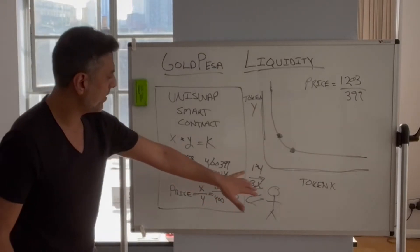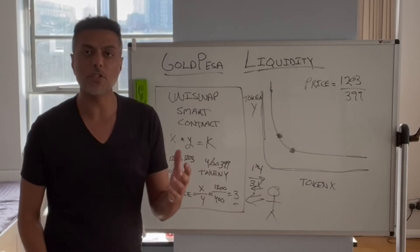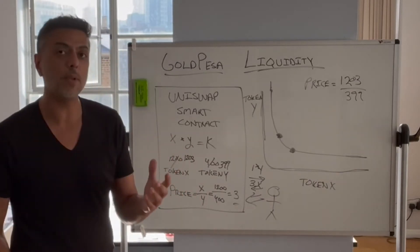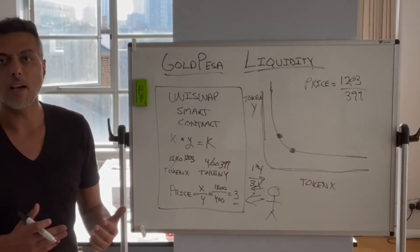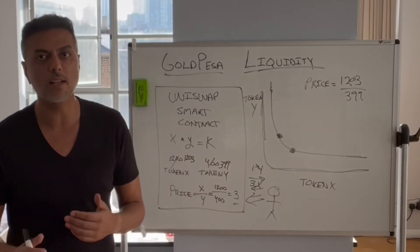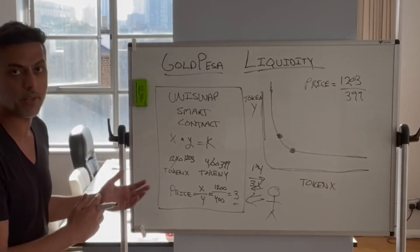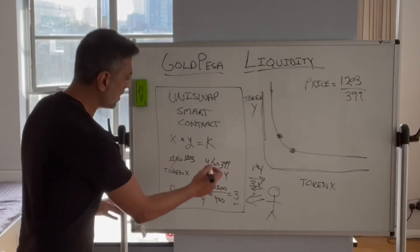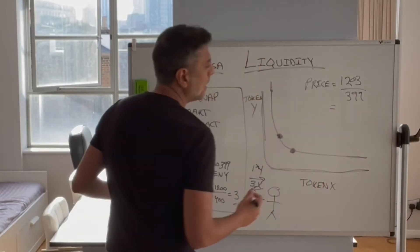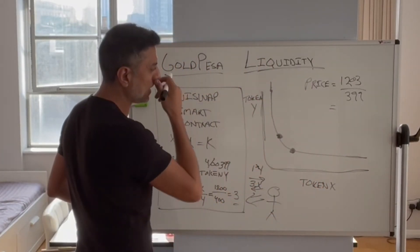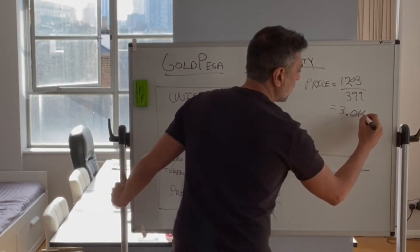You have to keep in mind that whenever there's a transaction, there's a fee on Uniswap. Right now with version two, that fee is 0.3%. But later when we talk about version three, that fee can vary between 0.05%, 0.3%, and 1%, depending on the pair and the liquidity pool. But for basic math, we'll just stick with this. And this 1203 divided by 399 gives us the price, which is roughly 3.01511.